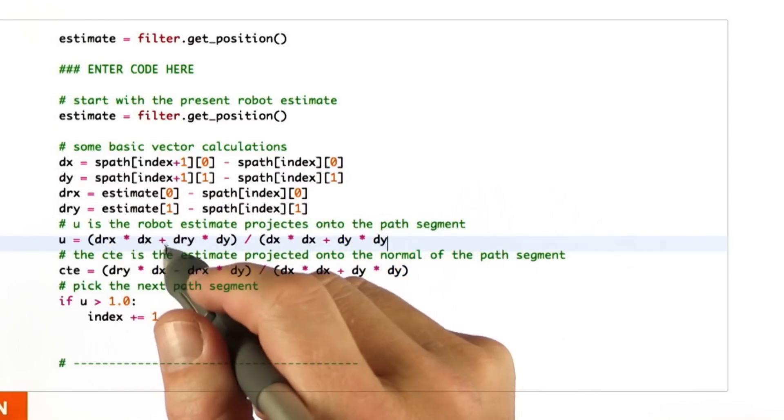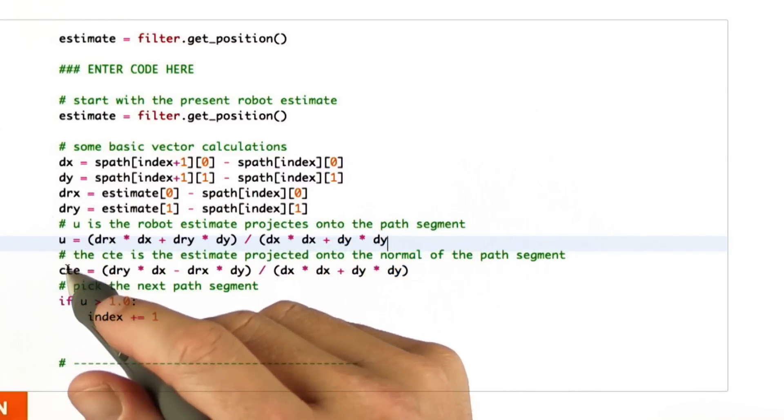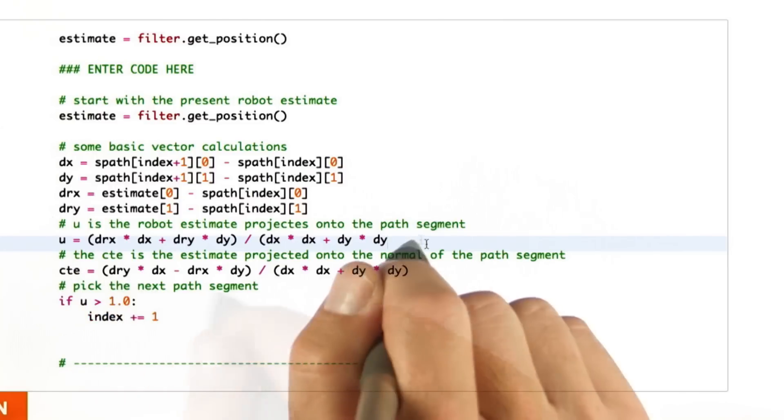And then I apply the exact same two equations that I gave you for the progress u and the cross-track error CTE as shown over here.